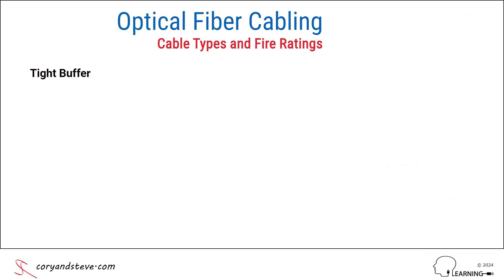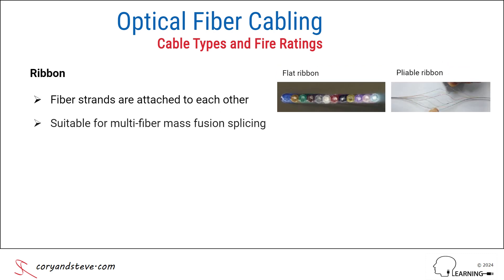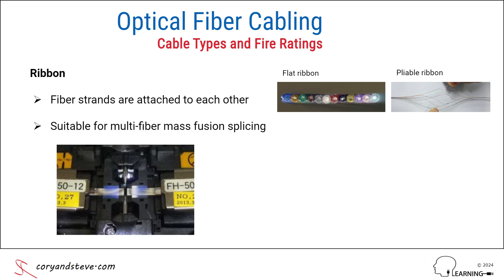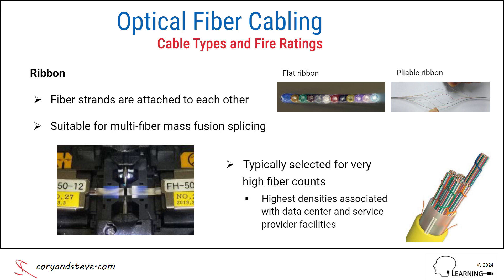The third type of cable construction is ribbon, where the fiber strands are attached to each other in a row, creating a flat or pliable strip of fibers suitable for multi-fiber mass fusion splicing, as shown here. The ribbon construction is typically selected for very high fiber counts, all the way up to nearly 7,000 strands in a single cable. Note that the highest densities numbering in the thousands are typically associated with data center and service provider facilities.